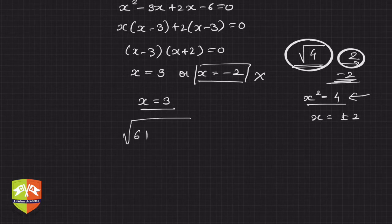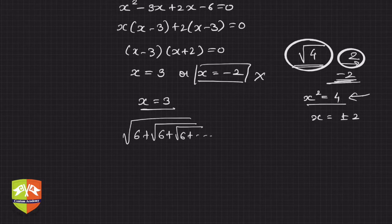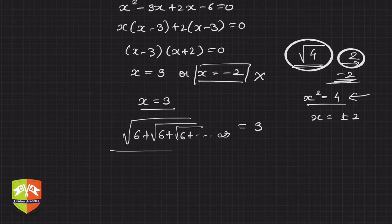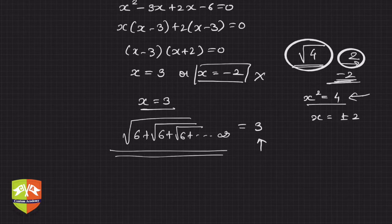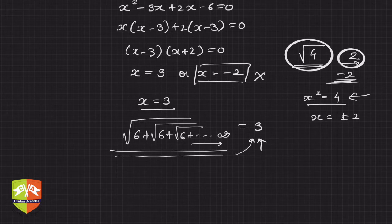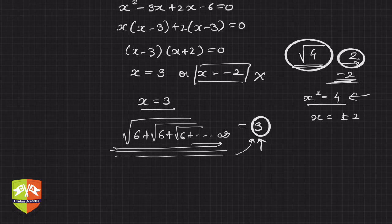Okay, so hence root of 6 plus root of 6 plus root of 6 plus infinite such radicals is equal to 3. Interesting that something which was appearing to be an irrational number ends up being a rational number. So actually if you see, this is a concept of limit. So as it goes towards infinity, the value tends to the value 3, and hence this is the limiting value of this particular nested radical.